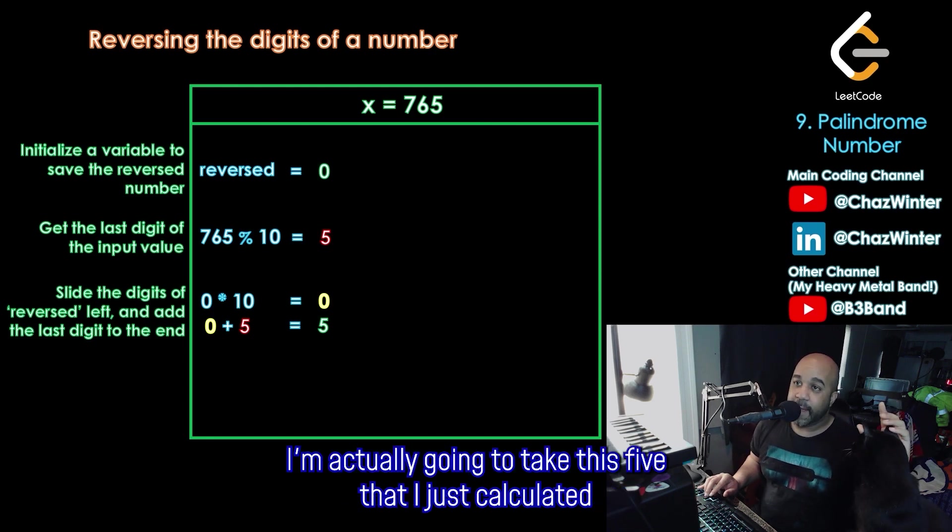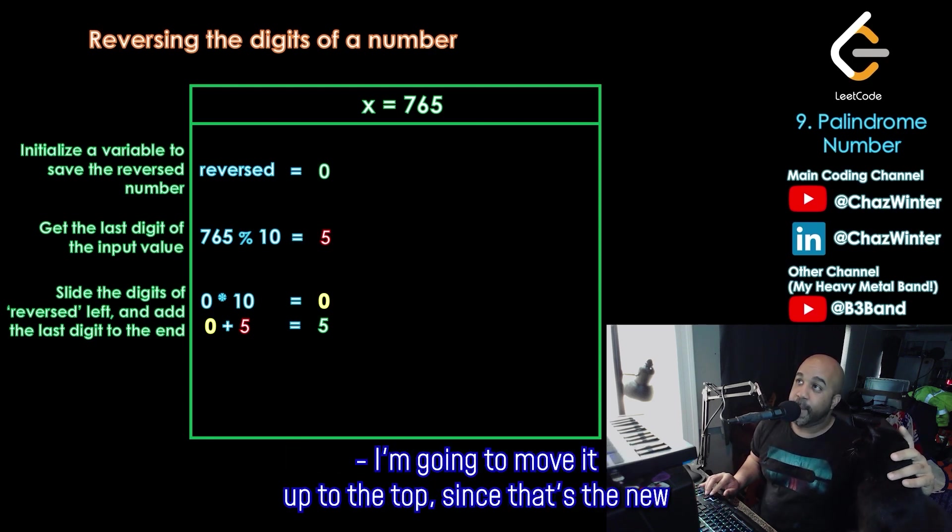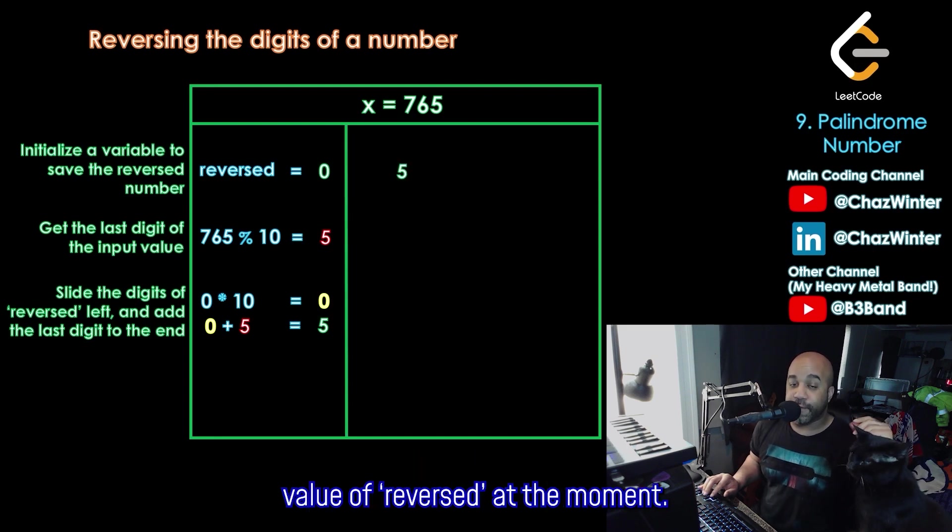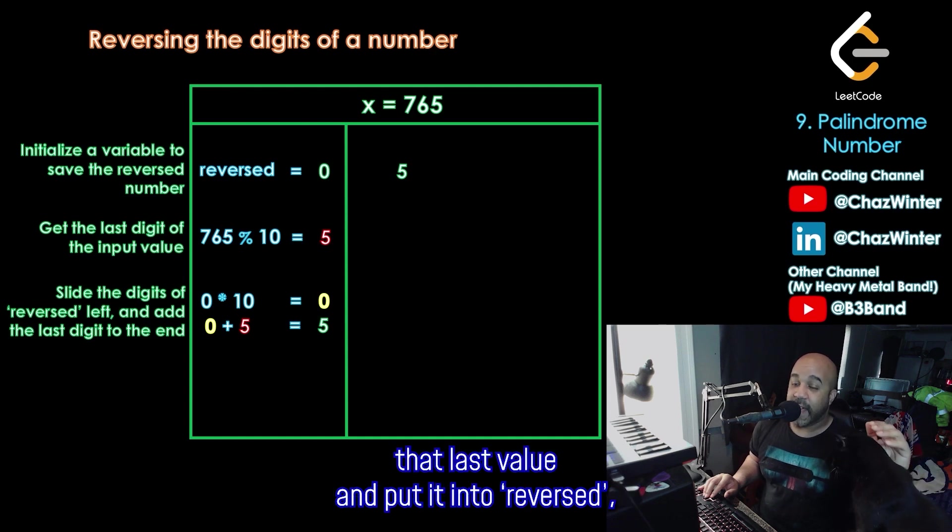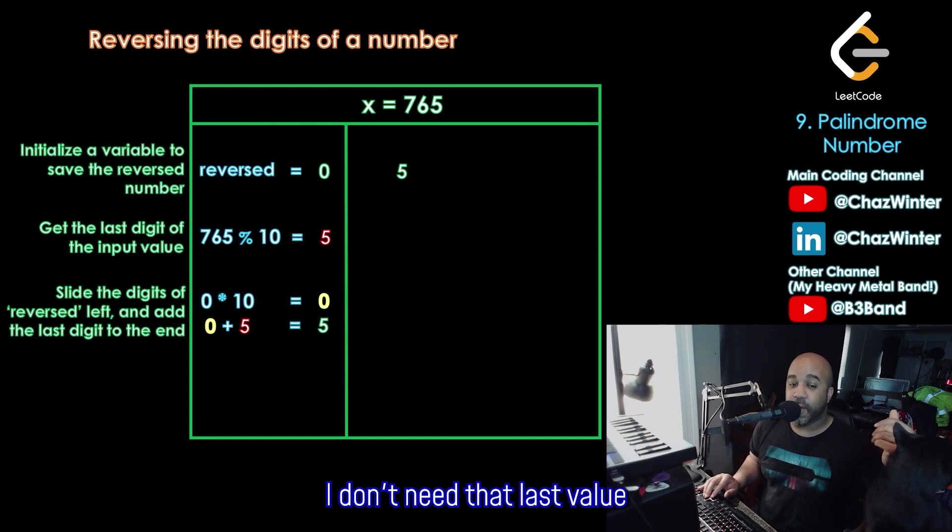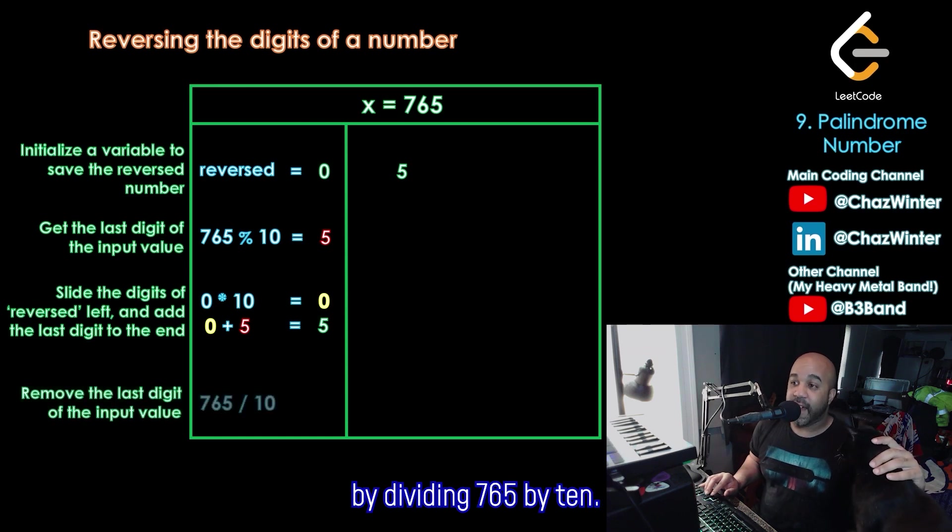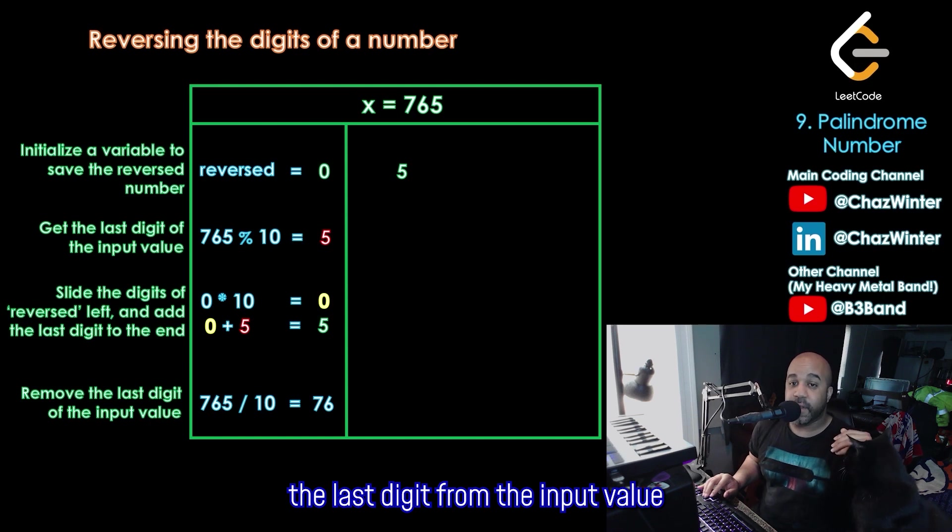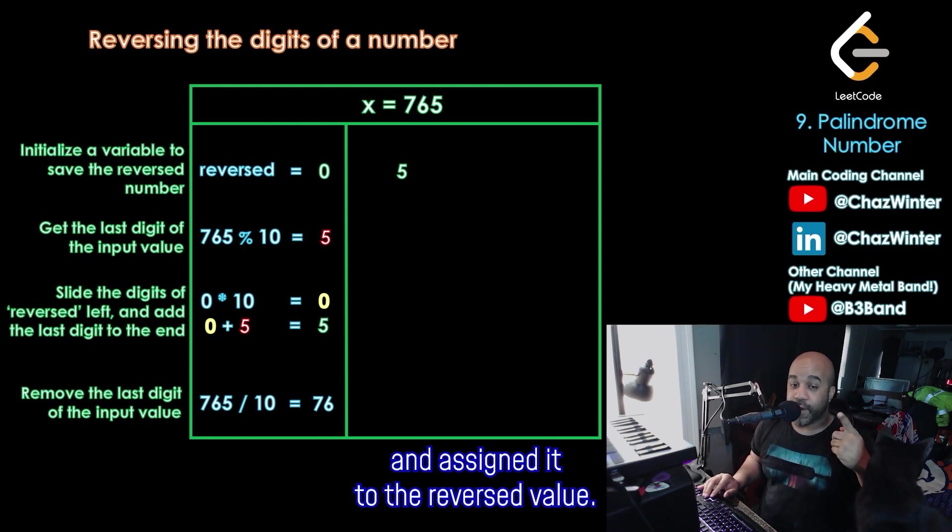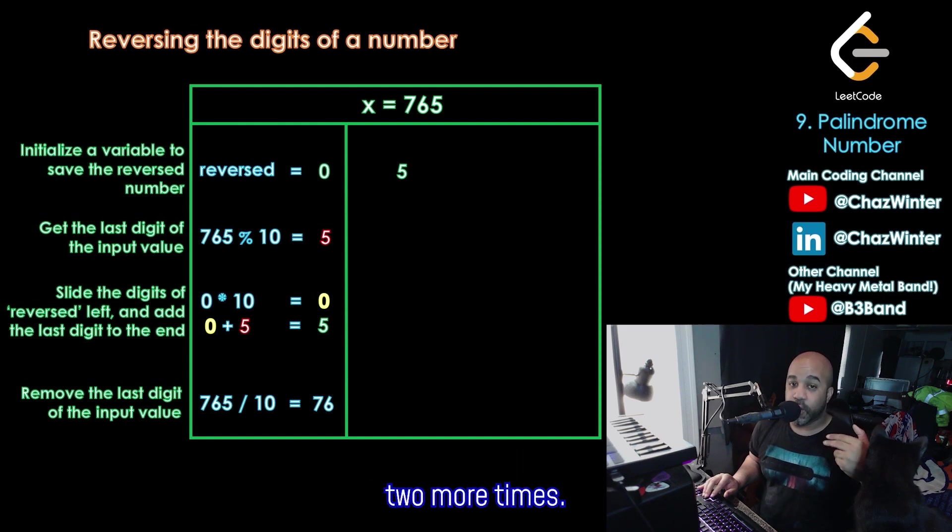This is going to be the first digit of my new number. Just to stay organized, I'm actually going to take this 5 that I just calculated. I'm going to move it up to the top, since that's the new value of reversed at the moment. Then my last step, since I've successfully isolated that last value and put it into reversed, I don't need that last value in the input value anymore. So I'm going to remove it. And I'll do that by dividing 765 by 10. That will discard the remainder and leave me with 76. So after one step, I've successfully removed the last digit from the input value and assigned it to the reversed value. All I have to do is do this two more times.